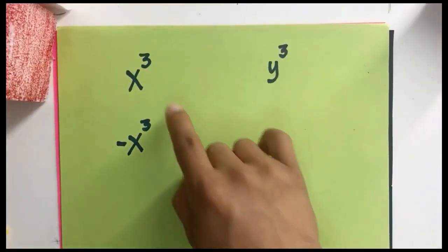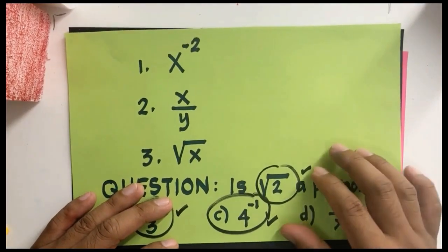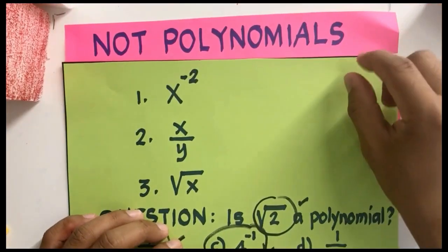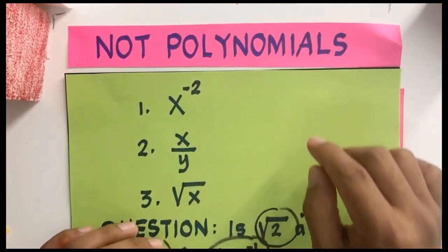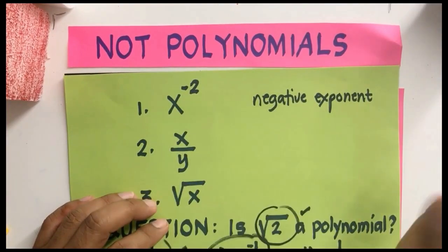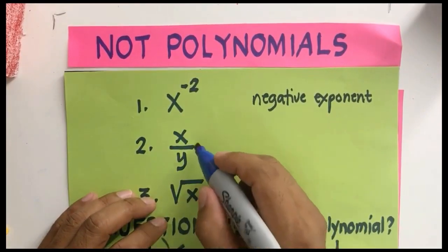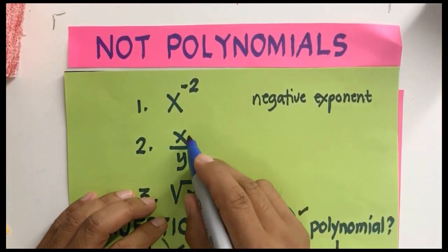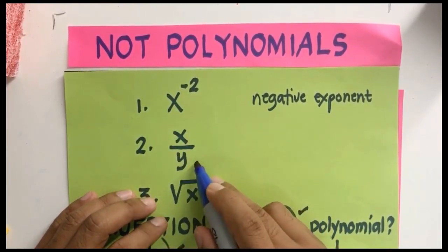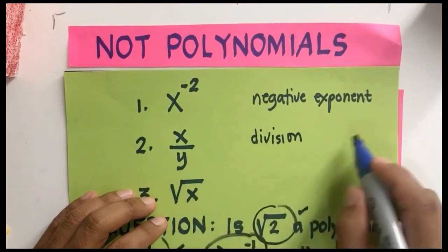The key point to emphasize: in order to have polynomials, the exponents must be positive integers. Here are examples that are NOT polynomials. x raised to negative 2 is not a polynomial because we cannot have a negative exponent — a negative exponent results in a rational expression, which is not covered in polynomial expressions.